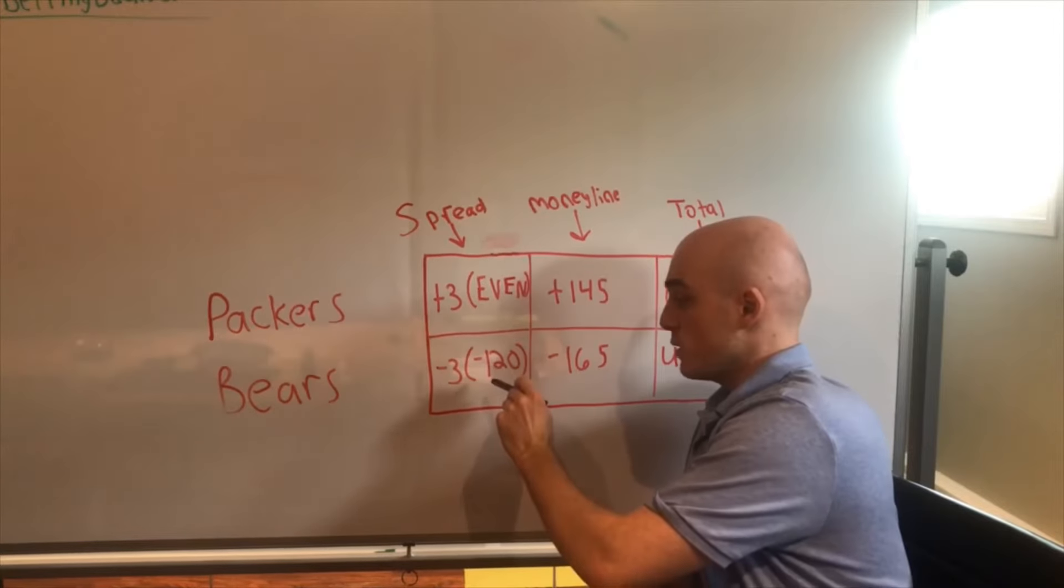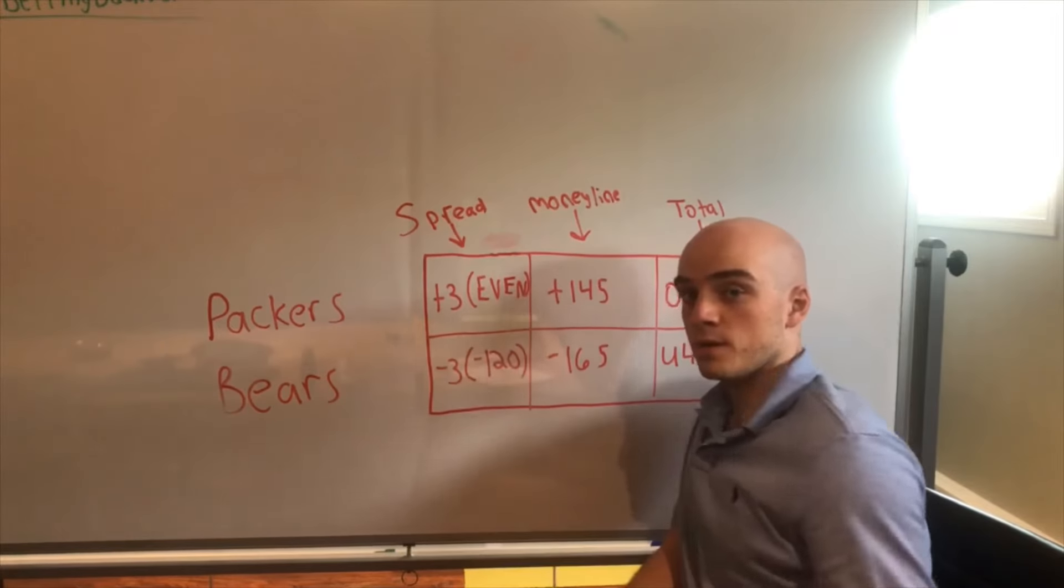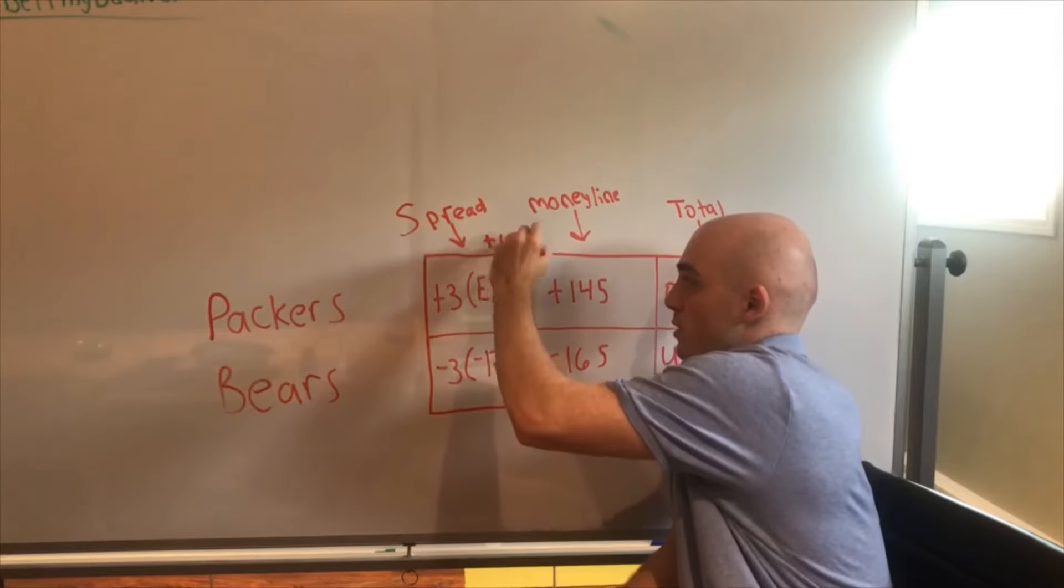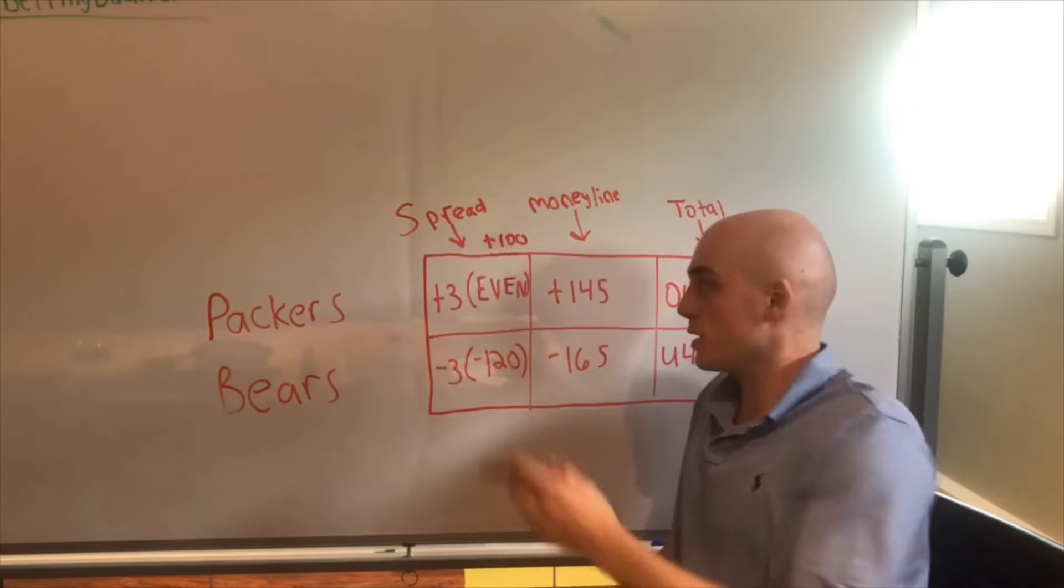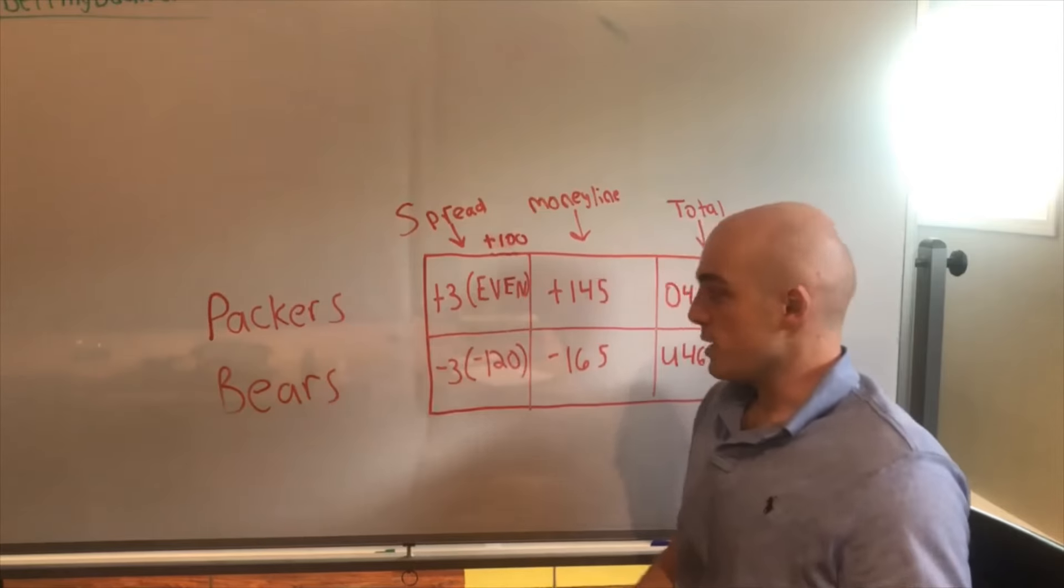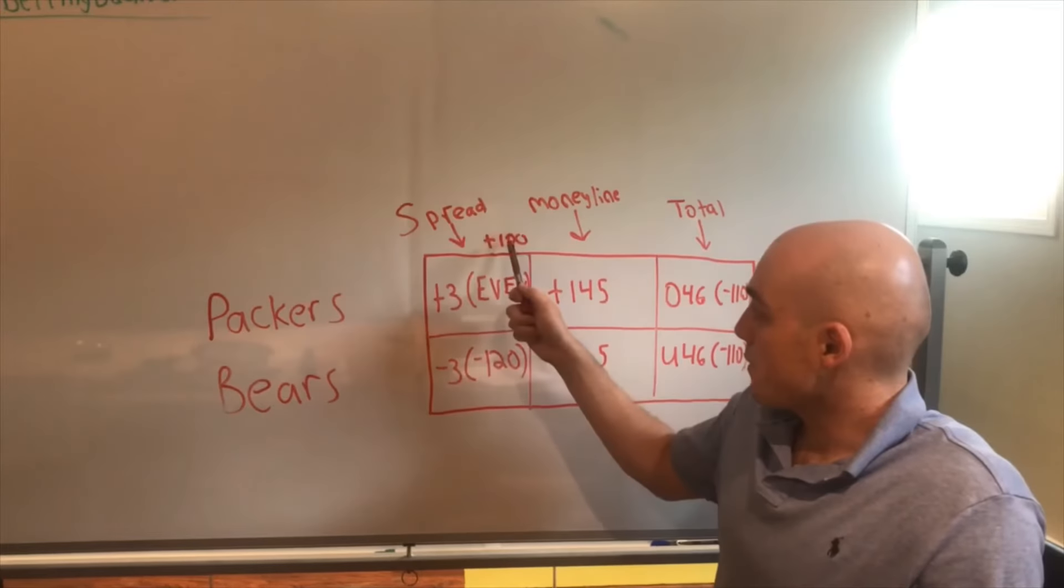And that's what this 'even' means right here - it's just plus 100, so every dollar you bet you get a dollar back at these odds. With these bets you're gonna have plus 100, minus 120, minus 110, minus 115, minus 105.